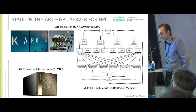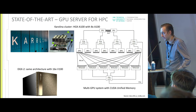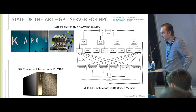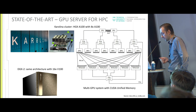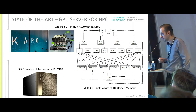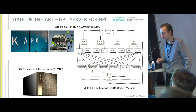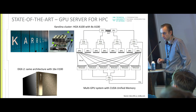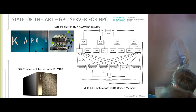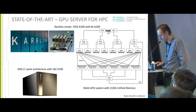The second cluster we have is DGX2. It has the same architecture, but it contains 16 GPU cards, and you can use over 500 gigabytes of GPU memory together.